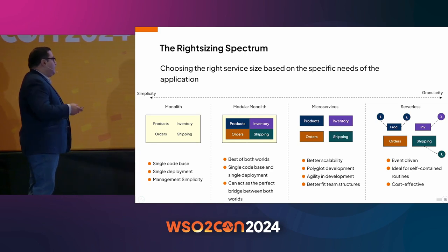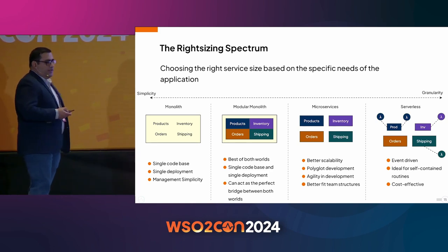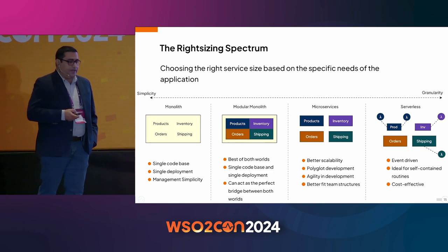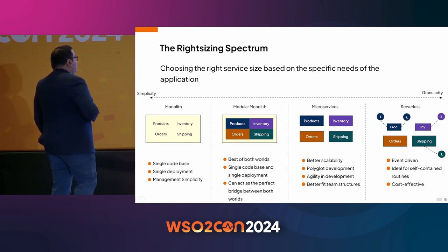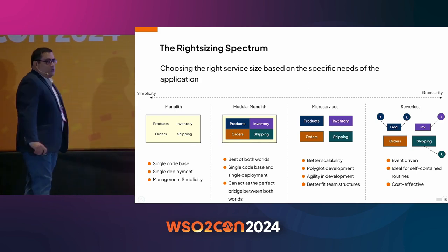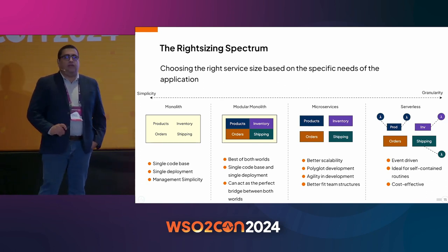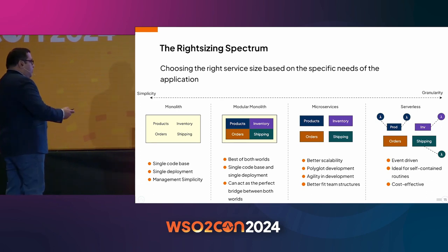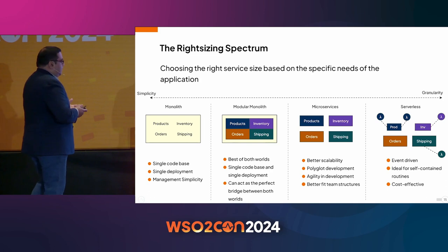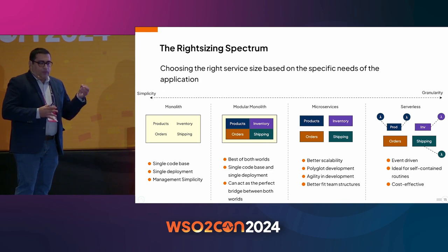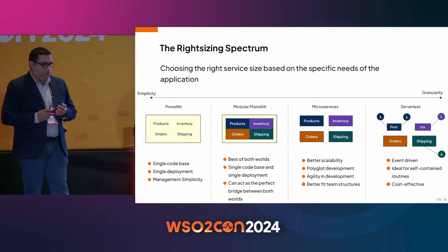On the left corner you have the monolith — single code base, single deployment, very easy to manage. This might be a great place to start when you develop an application. But if you're forward-thinking and want to get the benefits of microservices at some point, you may opt to start with a modular monolith, where your modules are a little bit more loosely coupled. You have the best of both worlds: a single code base and single deployment at the beginning, with the ability to scale modules independently as you go on.